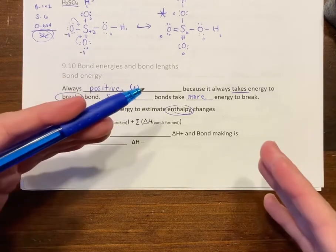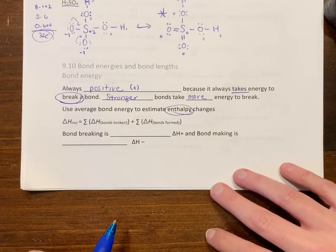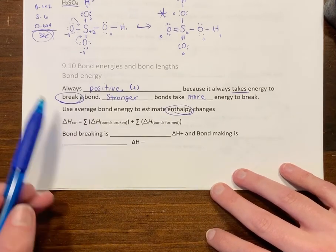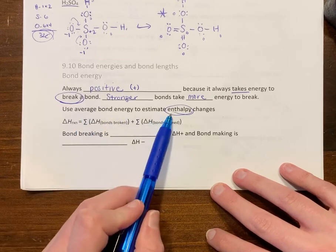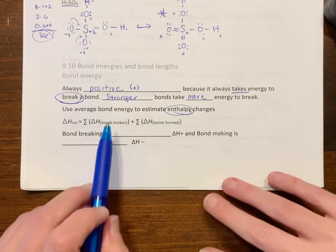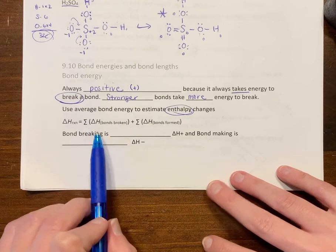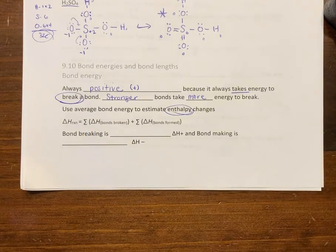You can use average bond energy to estimate enthalpy changes. You do this very similarly to Hess's law, an enthalpy calculation from a standard table.